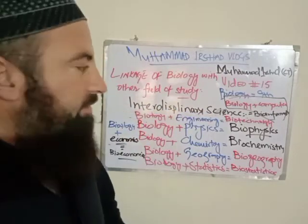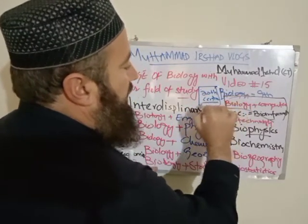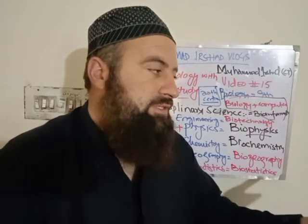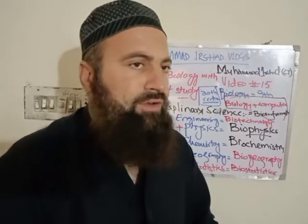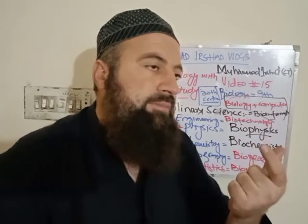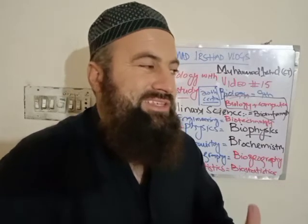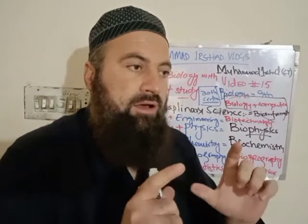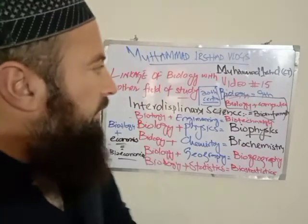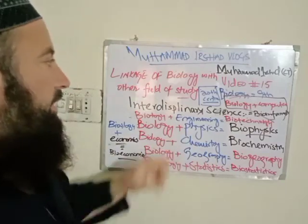Biotechnology involves subjects deeply related to biology. Interdisciplinary science developed mainly in recent centuries — in the 21st century. As subjects developed, new discoveries were made. For example, in physics, the law of reflection describes how light reflects, and this principle has been applied in the context of living organisms in biology.